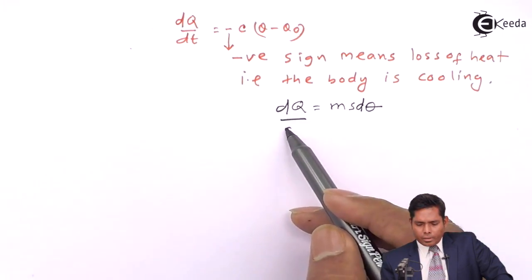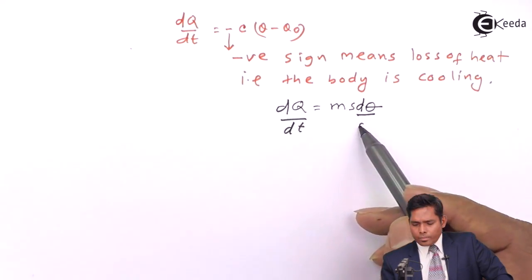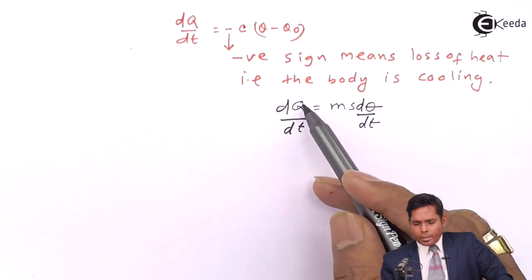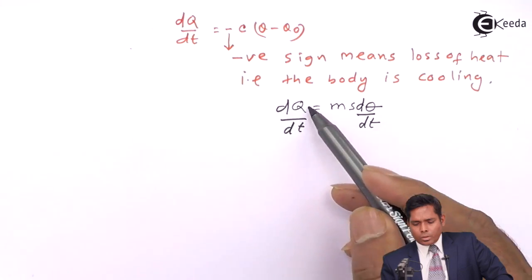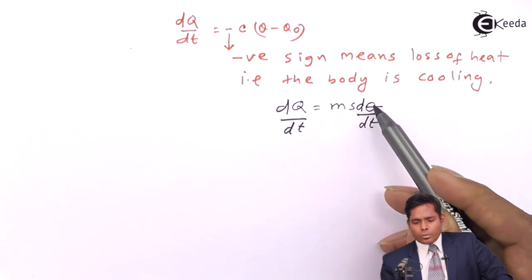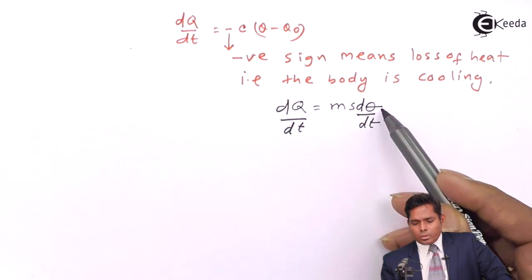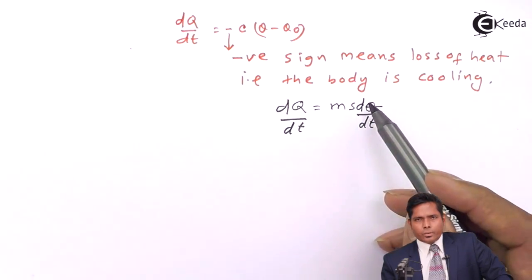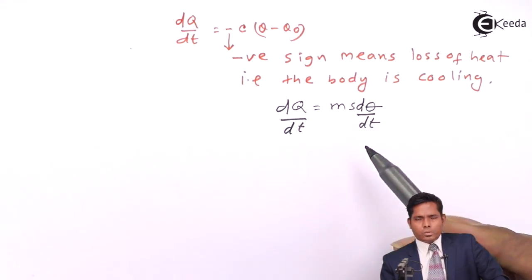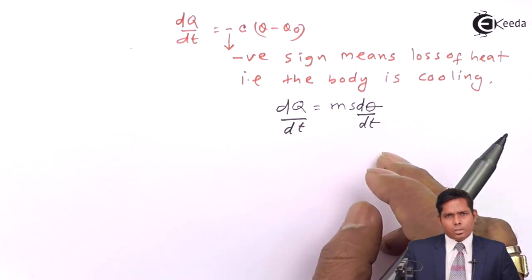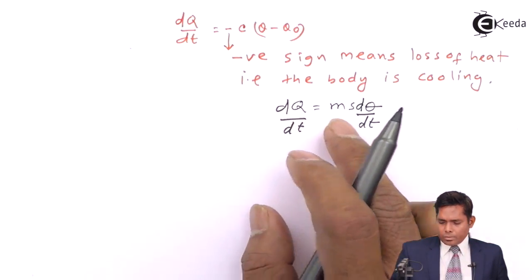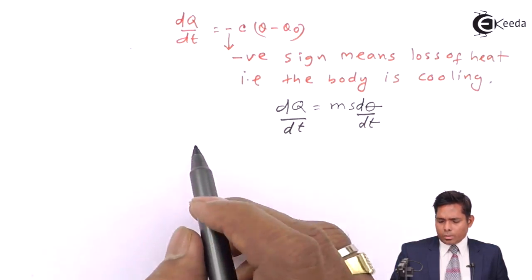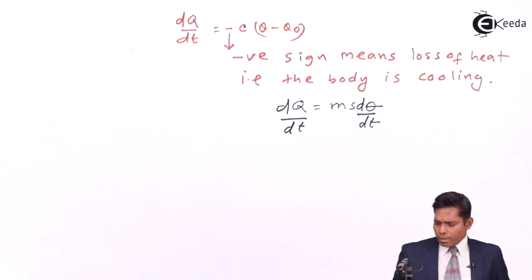So if I divide dt here on both sides, I have this expression of the rate of flow of heat. Here is the rate of cooling if the body is losing temperature. In fact, here it is a case of cooling. So in place of dQ/dt, I can substitute this value over there.